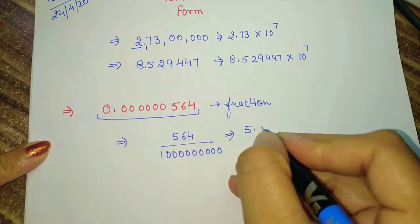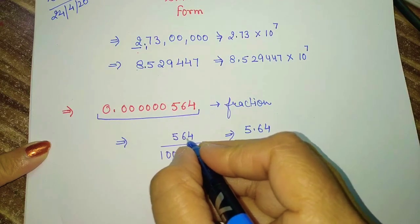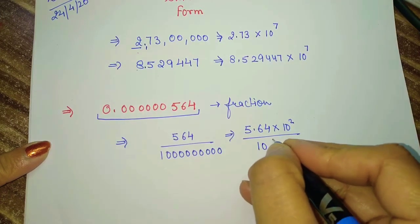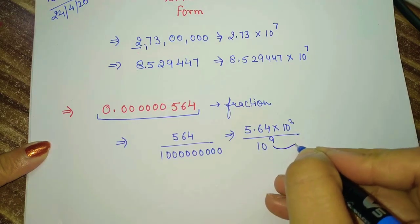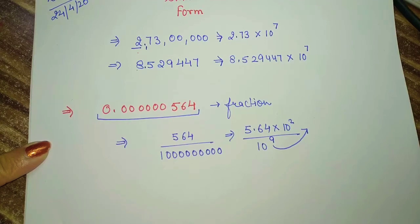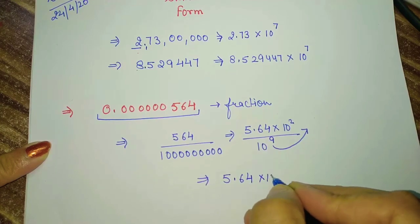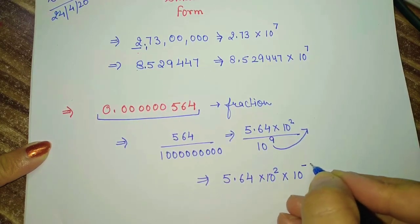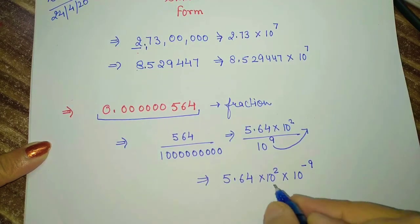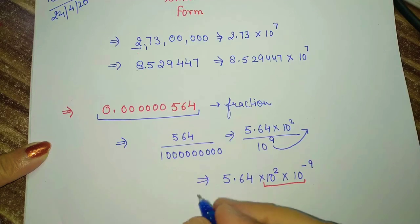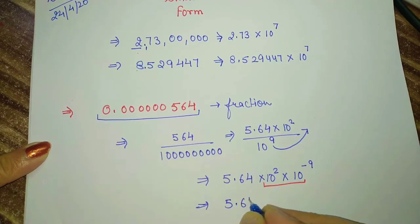So we can write 5.64 — because after the first digit we put the decimal point. After that, how many digits? 2 digits. So 10 to the power 2. And in the denominator we write 10 to the power 9. Now take this power up by writing it as a negative exponent. So we write 10 to the power 2 multiplied by 10 to the power minus 9. That gives 9 minus 2, so we can write 5.64 × 10 raised to the power negative 7.